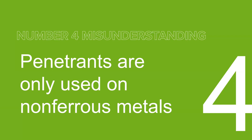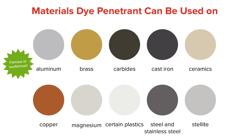Another misunderstanding: with penetrants you can inspect most materials. You've got aluminum, cast irons, steel, stainless steels, and also certain plastics — a wide variety of ferrous and non-ferrous materials. This is unlike magnetic particle testing, which can only be used on ferrous materials. With mag particle, a break in the magnetic field shows the indication; if you don't have a magnetic field in a non-ferrous part, you won't show any indications.